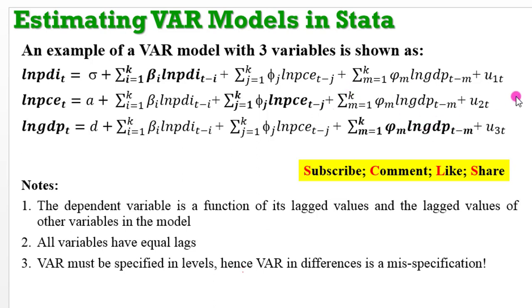On the screen is the three-variable VAR model that we are still using: FDI, PCE, and GDP. I remember saying in that video that in the VAR model, the dependent variable is a function of its lag values and the lag values of other regressors in the model, and that all the variables in the VAR model have equal lags. The way you specify your VAR equation is very important. You don't specify it in first differences. VAR must be specified in levels. If you specify in first differences, you have only misspecified that VAR model.